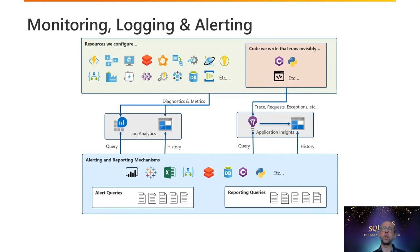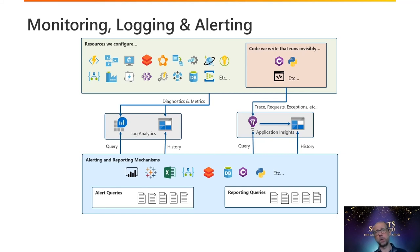Here's a pictorial representation of that monitoring setup. On the top left, PaaS services have diagnostics and metrics enabled, going through to Log Analytics and a storage account. Code written in C#, Python, PowerShell, or Bash logs to Application Insights and the same storage account. Alert queries run every few minutes, while reporting queries run daily, weekly, or monthly for trend analysis to gain insight into the overall state and quality of the service and data on the platform.